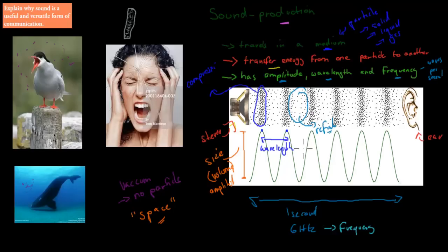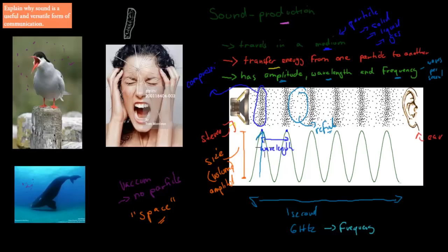To summarize: sound travels in a medium — solid, liquid, or gas. It transfers energy from one particle to another; the particle itself doesn't move to the ear, but rather transfers its energy to the next. Sound waves have amplitude, wavelength, and frequency. Amplitude is the height of the wave, which is the volume. Wavelength is from peak to peak. Frequency is how many waves pass one point per second.